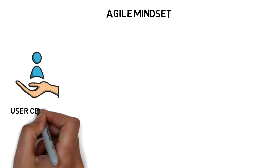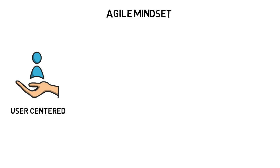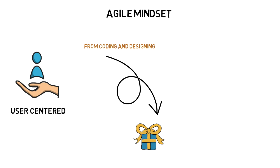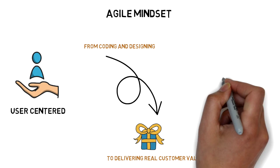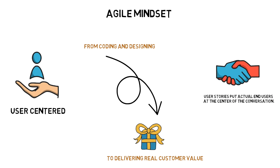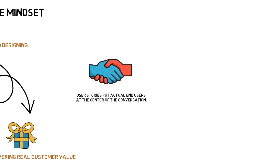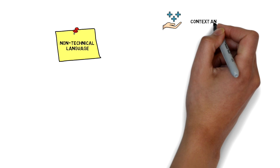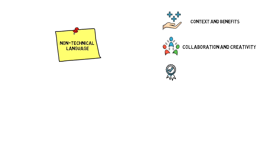A key element of the agile mindset is putting people first. Agile is a user-centered approach — it shifts the focus from just coding and designing to delivering real value to your end-users. User stories put actual end-users at the center of the conversation. They use non-technical language, provide context for teams, and let them define what benefits the product will bring to their target audience. User stories drive collaboration, creativity, and a better product overall.